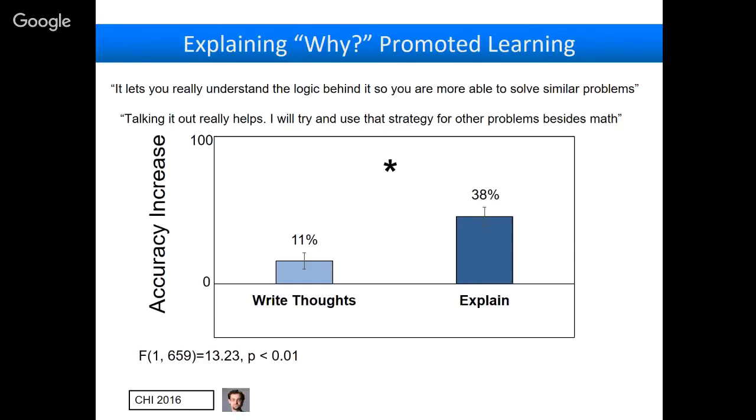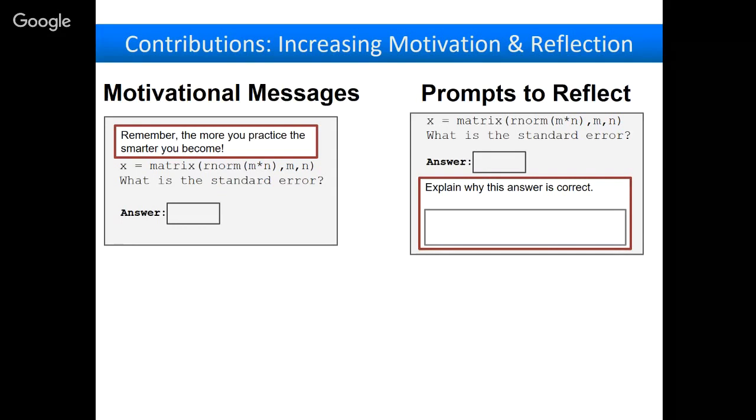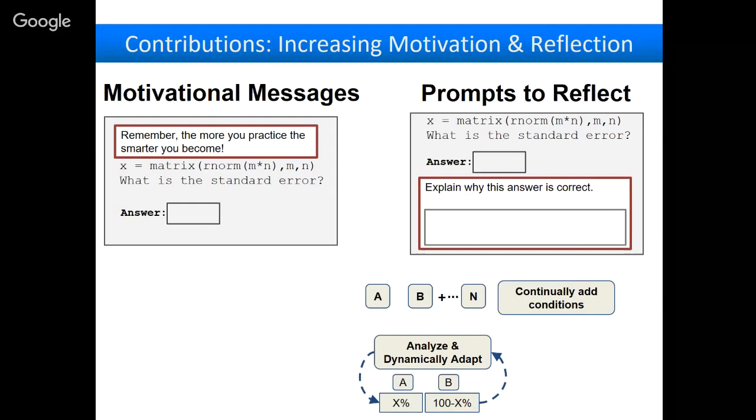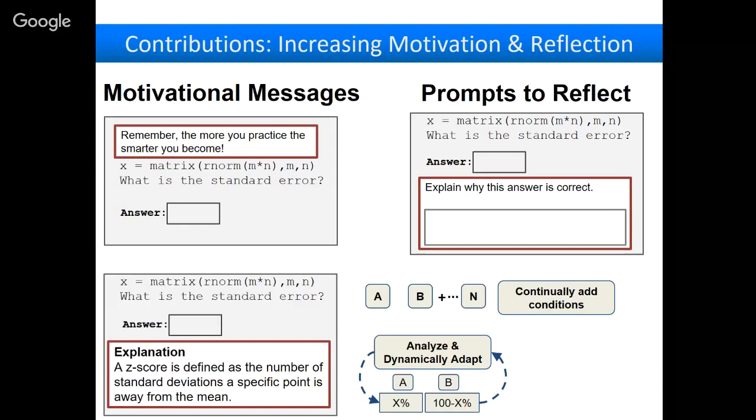These are two insights into maybe more traditional experiments. How do you increase motivation? How do you get people to reflect so they find patterns? But I really was pushing this vision of how do we keep adding new conditions to an experiment? And how do we actually dynamically analyze data so we can improve what future students get, based on the responses of the previous students?